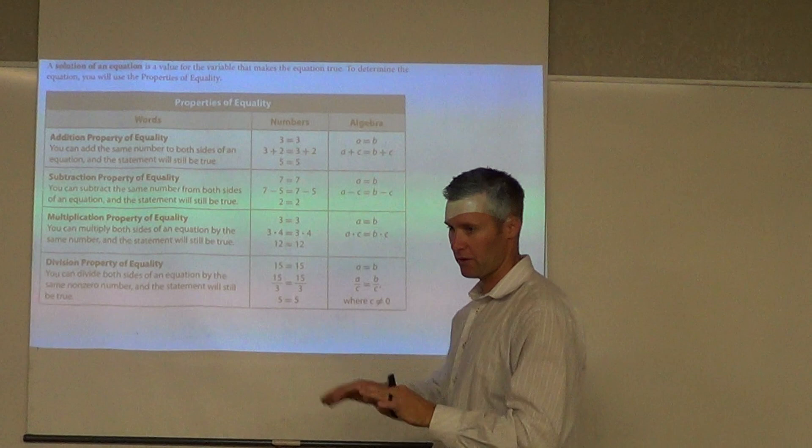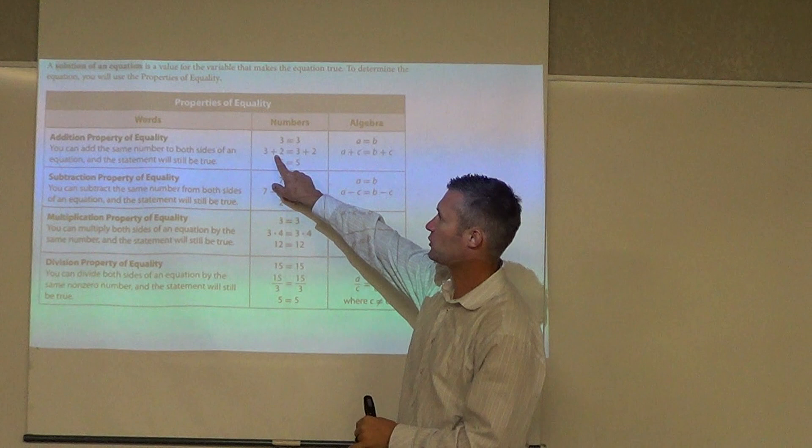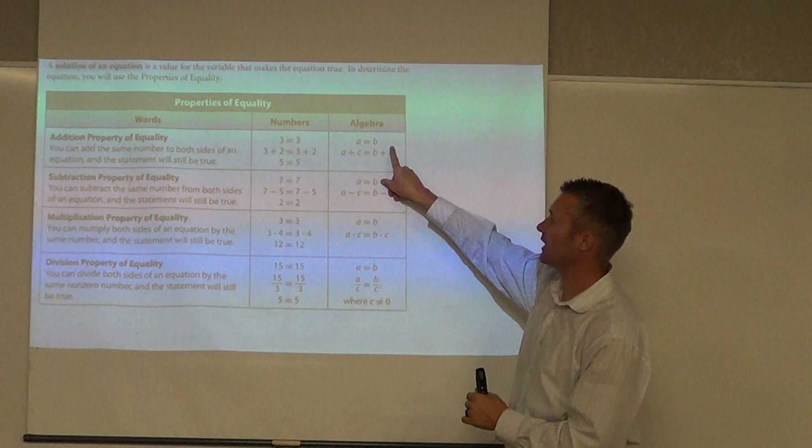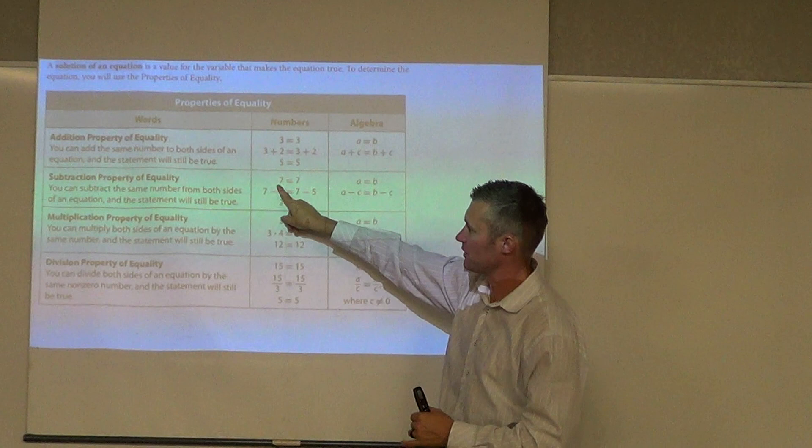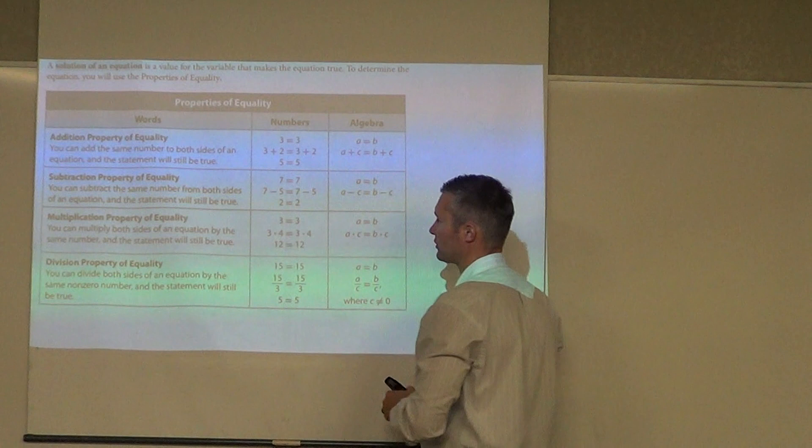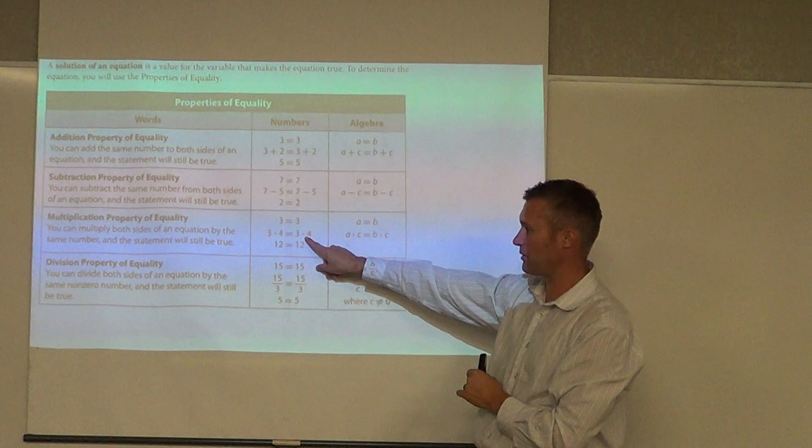Basically, this is the idea: whatever I do to one side of the equation, I need to do to the other side. So if I add two on one side, I need to add two to the other side. If I add a variable, if I add c on one side, I need to add it to the other side. If I subtract on one side, minus 5, I have to do it to the other side of the equation. So we break that into two equal parts. Whatever I do to one side, I've got to do to the other.